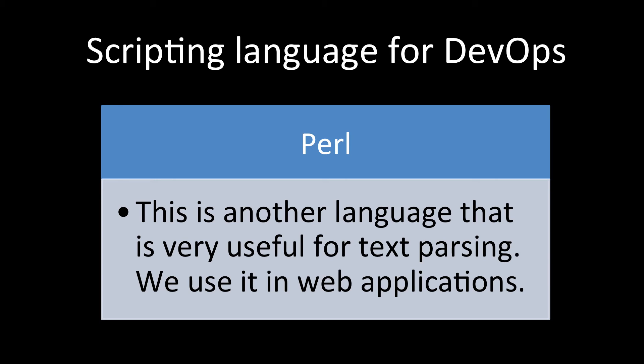Perl is another language that is very useful for text parsing. In Unix environments, there are many text parsing requirements, and those can all be handled in Perl. It is also widely used in web applications. All four scripting languages have different uses, and you should choose the one that best fits your specific responsibility — whether that's installation, microservices, or other tasks.